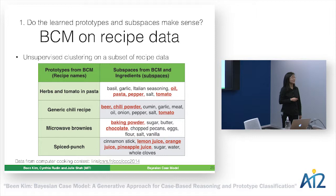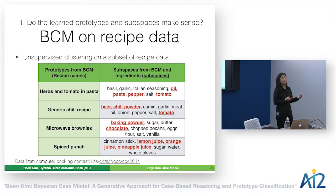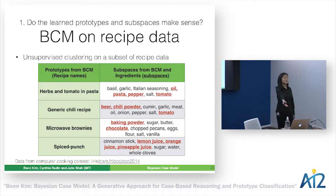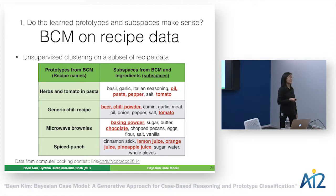PCA would give you a linear combination of features, not subspaces. It ensures features are orthogonal, so even picking the largest-coefficient feature probably won't give the same solution. BCM's approach is very different — you're going for sparse and representative features rather than a low-rank decomposition.